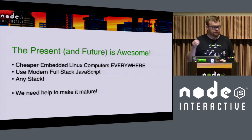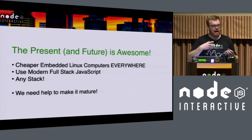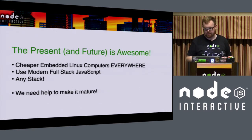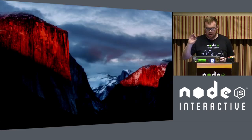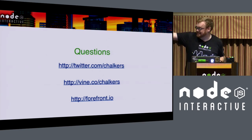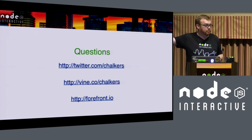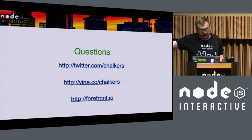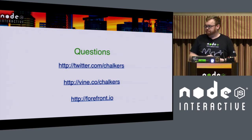I'm also building stuff for the Raspberry Pi and other embedded Linux systems to handle networking — like scanning for access points and handling the network connection. With IoT devices, you have to handle all that yourself, and I haven't seen any elegant solutions out there, so come join me and help. If you have any questions, you can find me on Twitter as Chalkers, I publish short videos on Vine as Chalkers, and when projects reach a reasonable state I write write-ups on Forefront.io. Thank you very much.